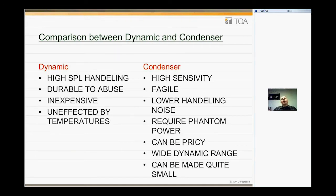Looking at the difference between dynamic and condenser microphones: dynamics tend to have higher SPL handling. In loud environments — for example, if you're going to put a mic on a kick drum or a trumpet — a dynamic generally can handle higher SPL than a condenser. They're a little bit more durable. When looking at wireless microphones, think of the environment. Is it going into a school? Does it have the potential to be dropped? Dynamics are less prone to damage from dropping and abuse. Because of their simplistic circuitry, they are a little bit more inexpensive compared to condensers. Additionally, they are less susceptible to temperature changes, moisture, and hot and cold environments.